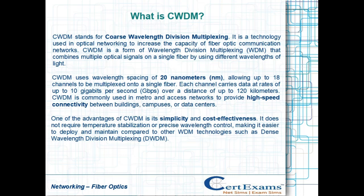CWDM is commonly used in metro and access networks to provide high-speed connectivity between buildings, campuses, or data centers.